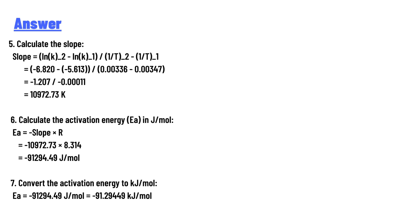Calculate the slope using: slope = (ln(k₂) − ln(k₁)) / (1/T₂ − 1/T₁) = (−6.820 − (−5.613)) / (0.00336 − 0.00347) = −1.207 / −0.00011 = 10972.73 K.